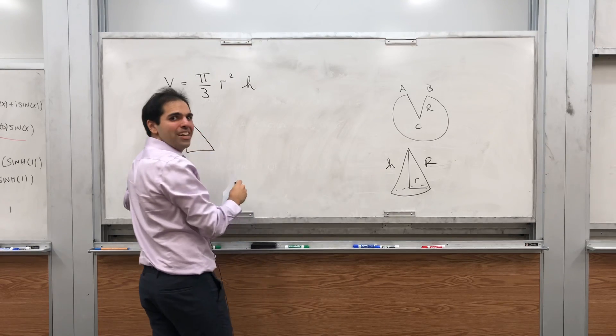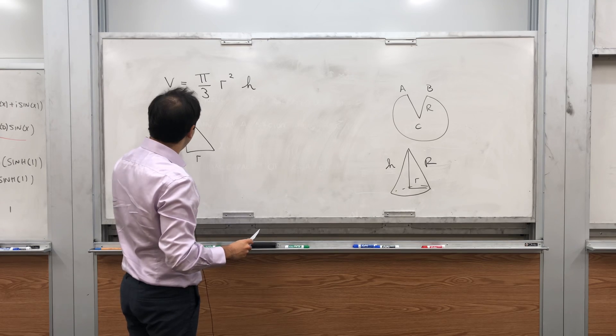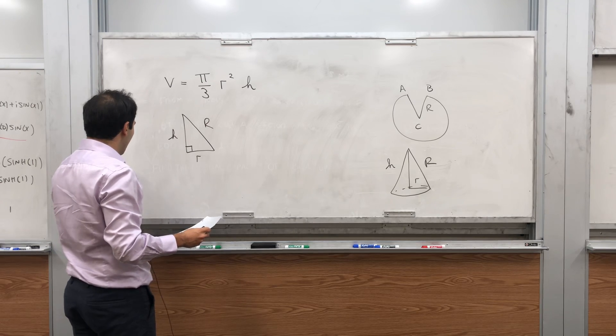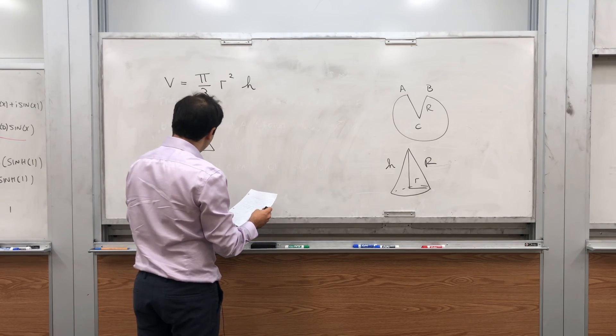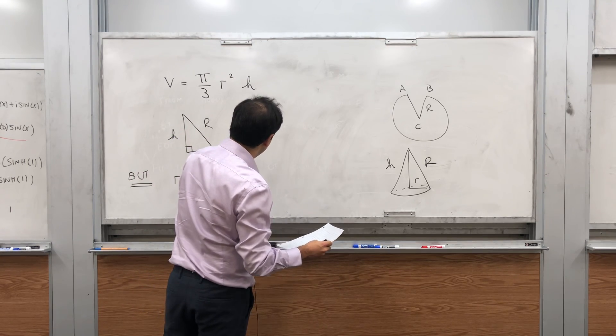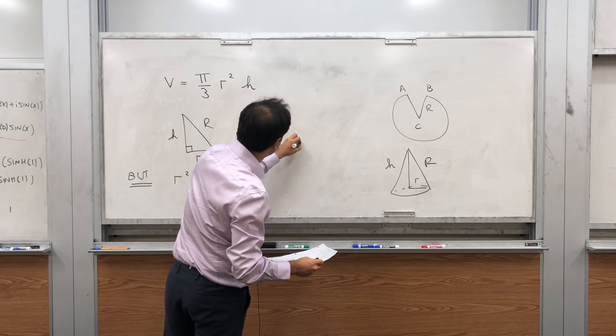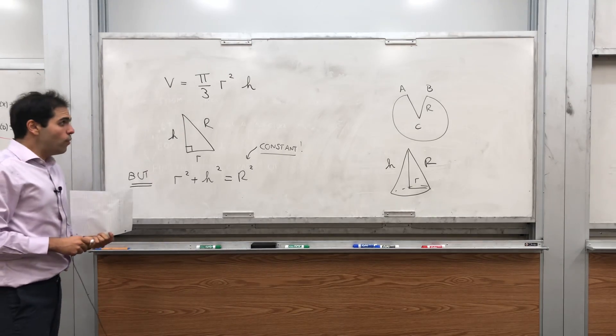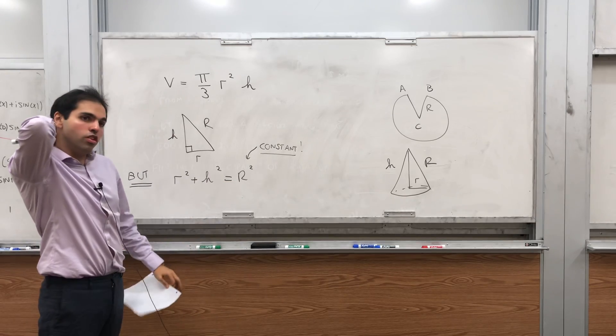So let's do a profile view of the function. That's r, h, and capital R. Well, it's a right triangle, so we can apply the Pythagorean theorem. r squared plus h squared equals big R squared. And what's important is big R squared is constant. So it doesn't depend on anything. And you have two choices, you could solve for h in terms of r,